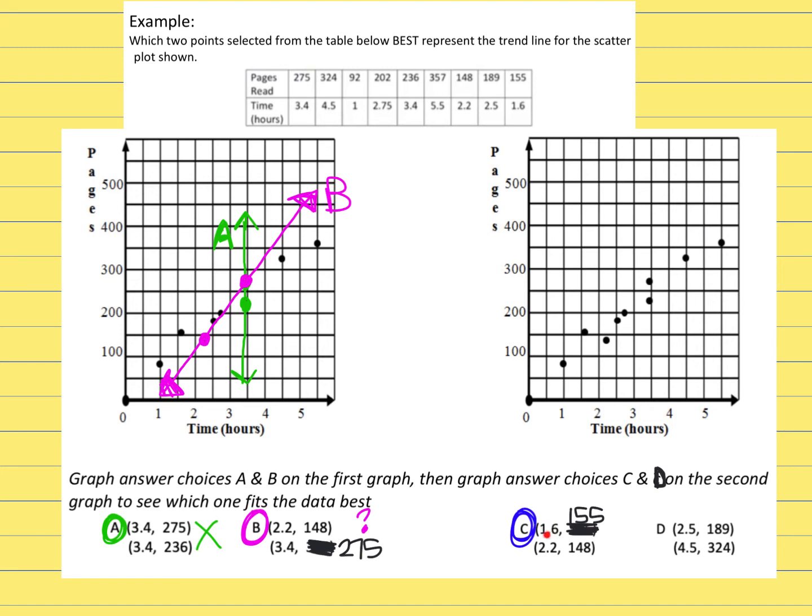Answer choice C, it says 1.6 and 155. So 1.6 would be just past the 1.5. 155 would be right here, right above 150. So I'm going to move over that dot.